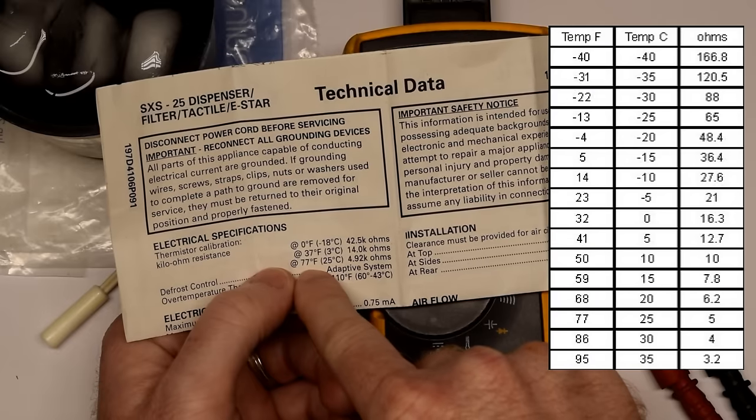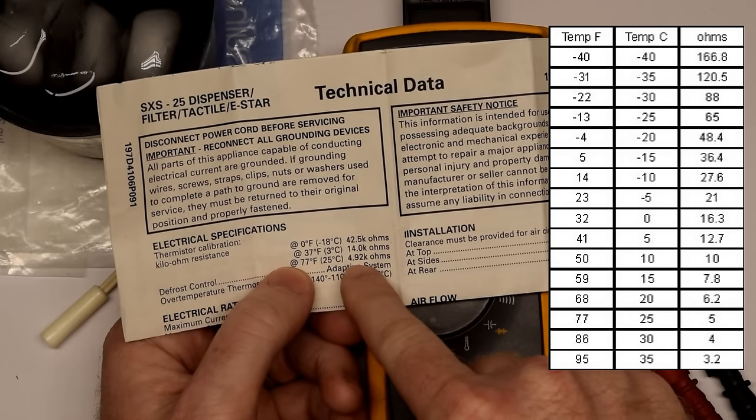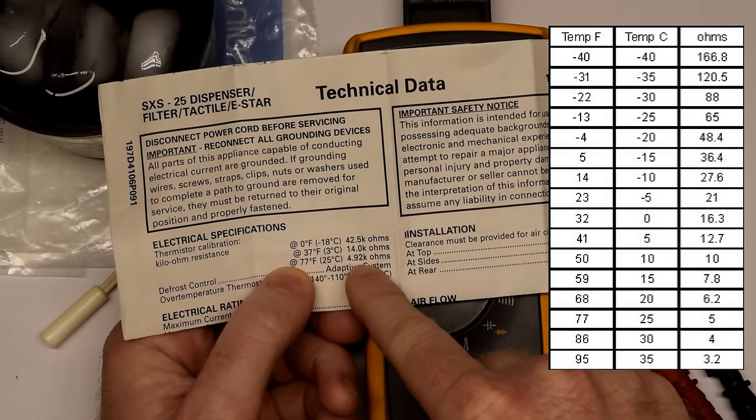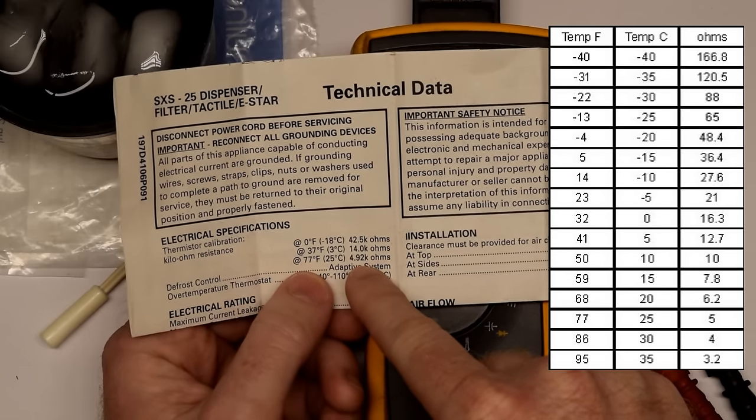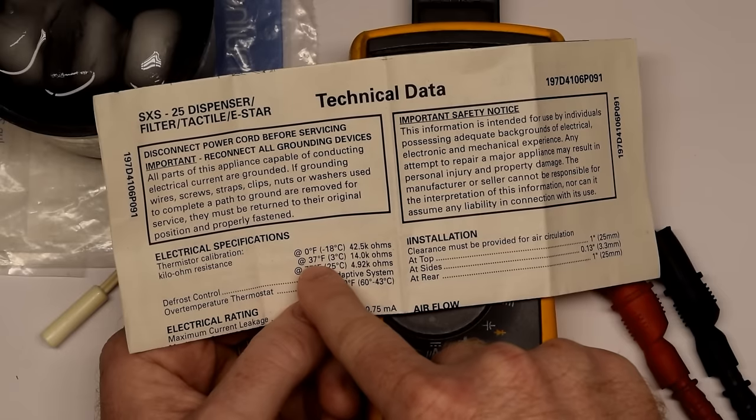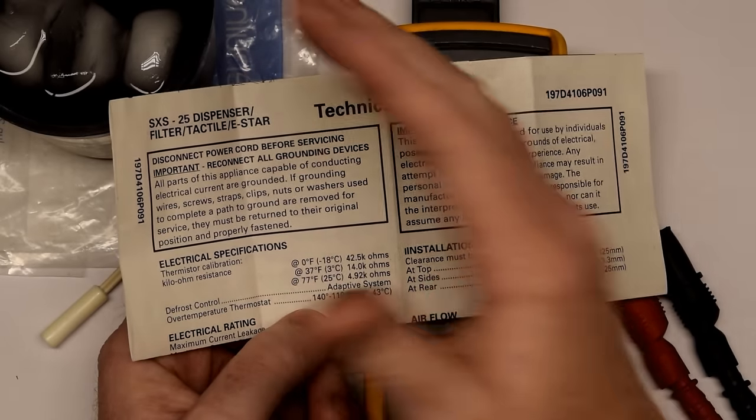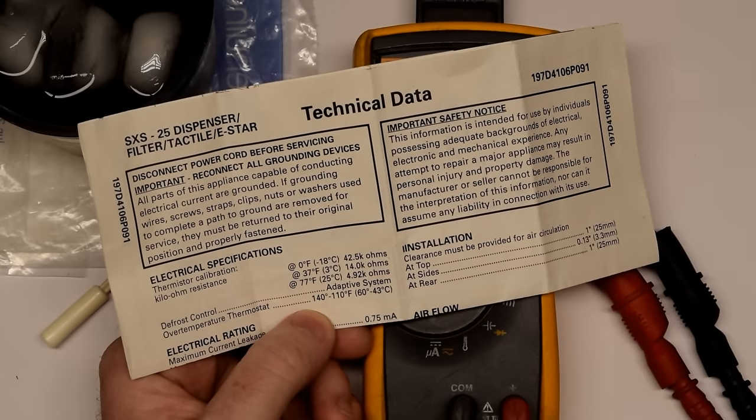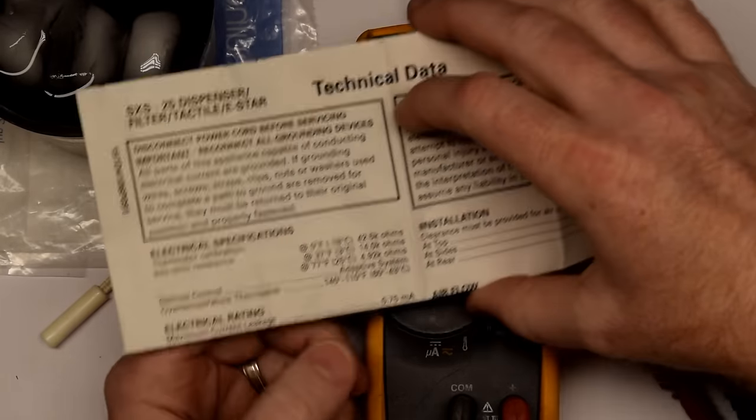But they give us three reference points. One is 77 degrees Fahrenheit. That means we should read out at 4.92 ohms, 92K ohms. And then at 37 degrees, roughly the temperature of ice water, it should be about 14K ohms. So this just gives you a reference point to go by.